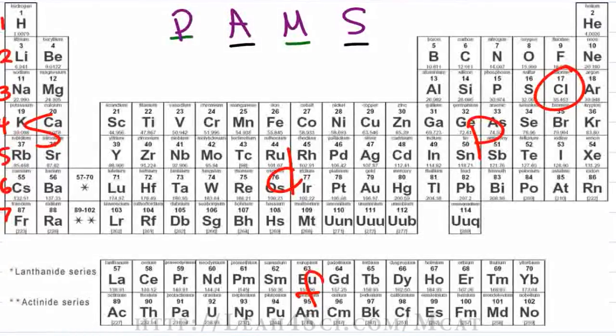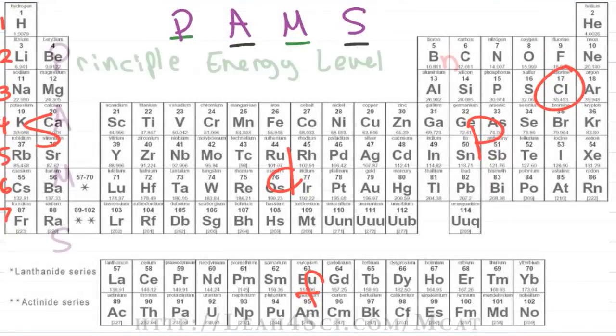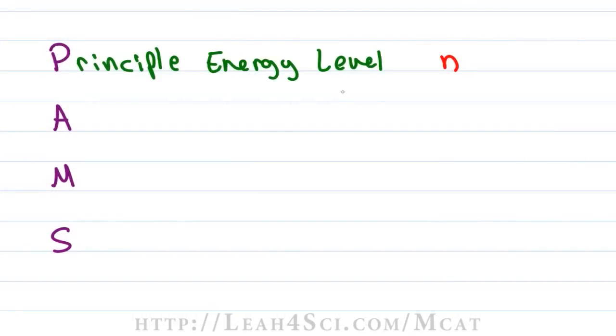But just because the table ends at 7 doesn't mean our values end at 7 because if you have an electron and you give it a boost of energy putting it into an excited state, that electron can fill an orbital beyond level 7 and so your N value will be all positive numbers starting from 1 and going to infinity.